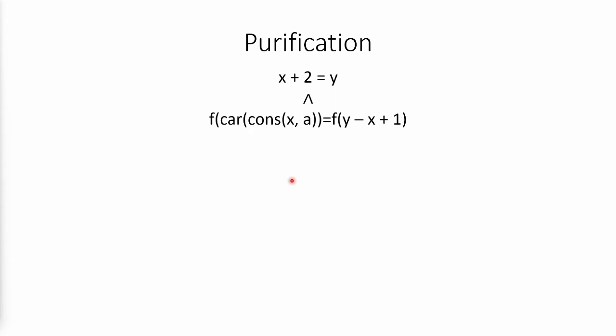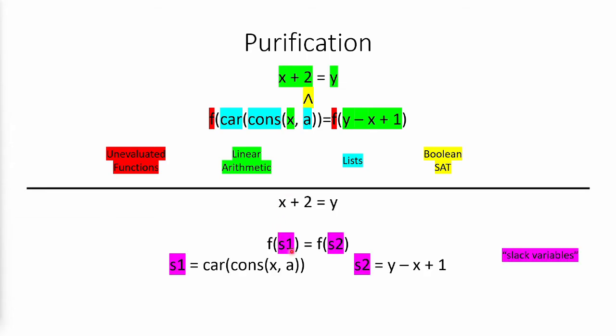Now what if we have a formula with more than one theory? This formula for example has functions, it has arithmetic, it has lists and also of course boolean logic. What we're going to do is a purely syntactic substitution where we just introduce new variables to separate out different theories.